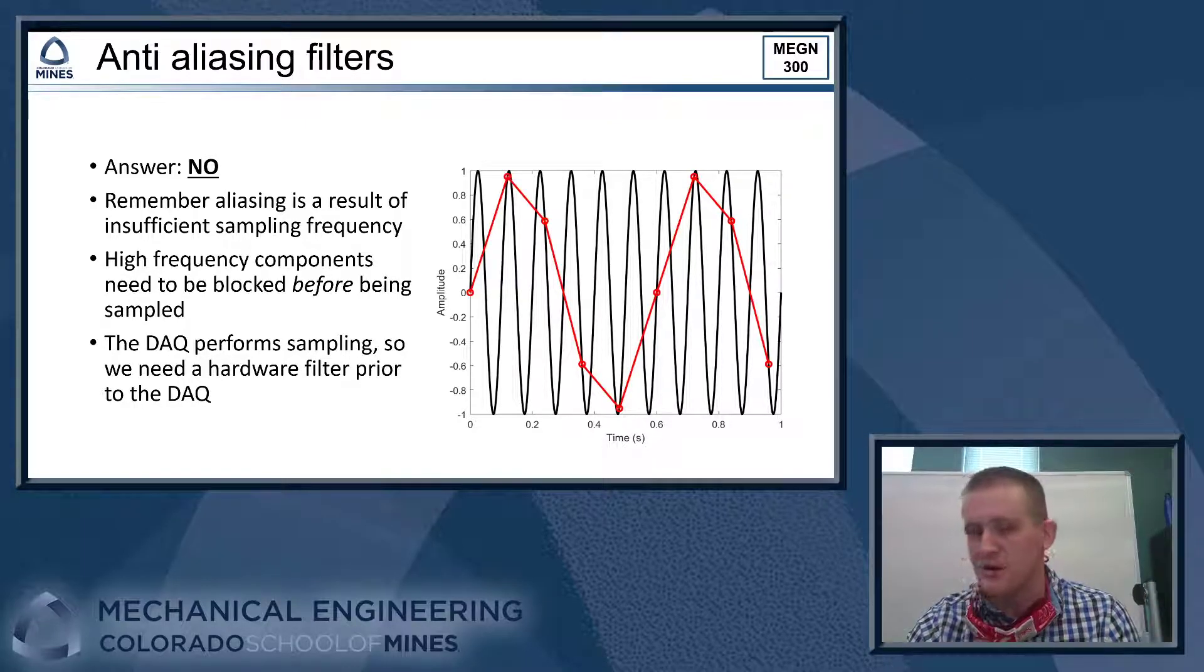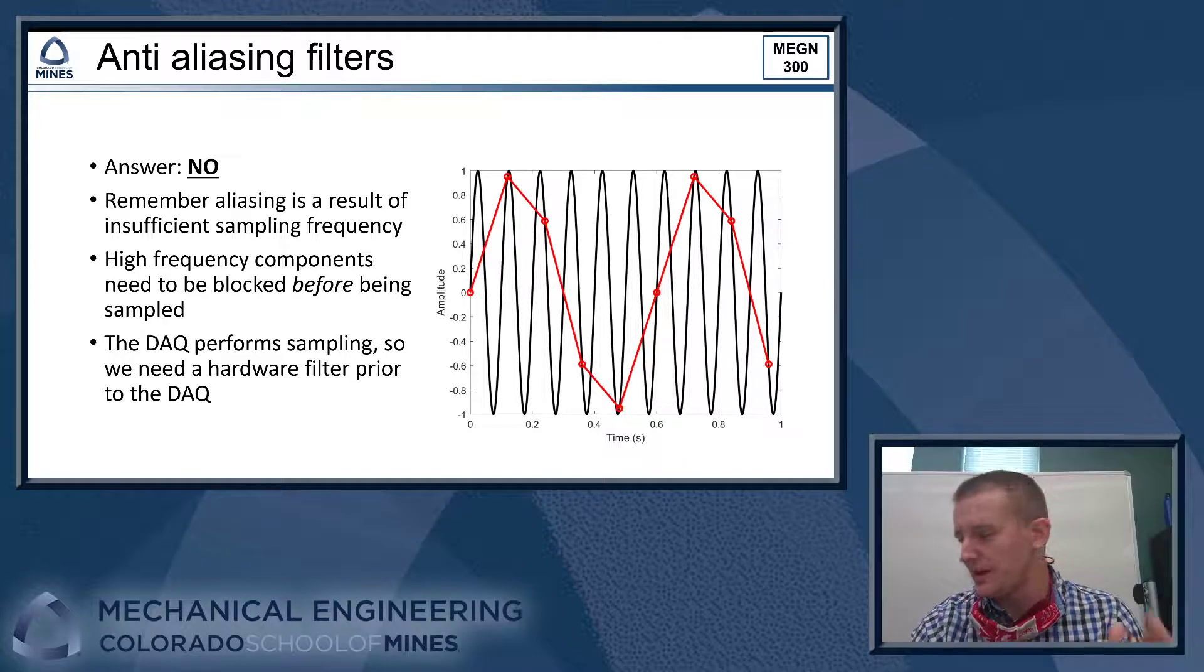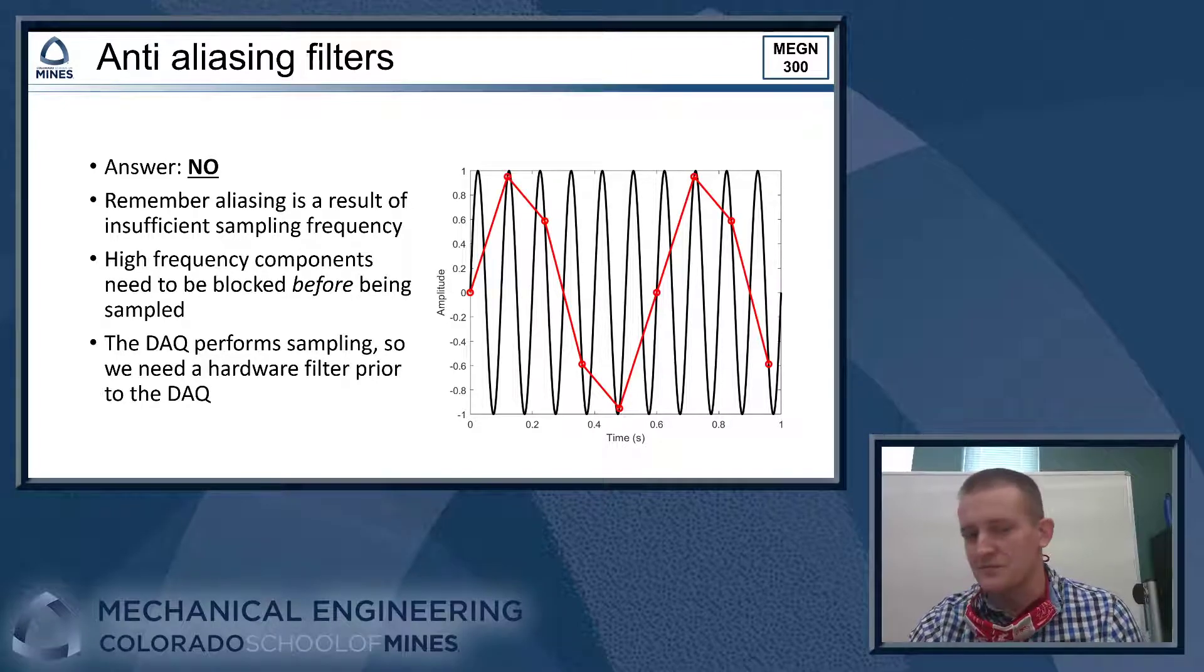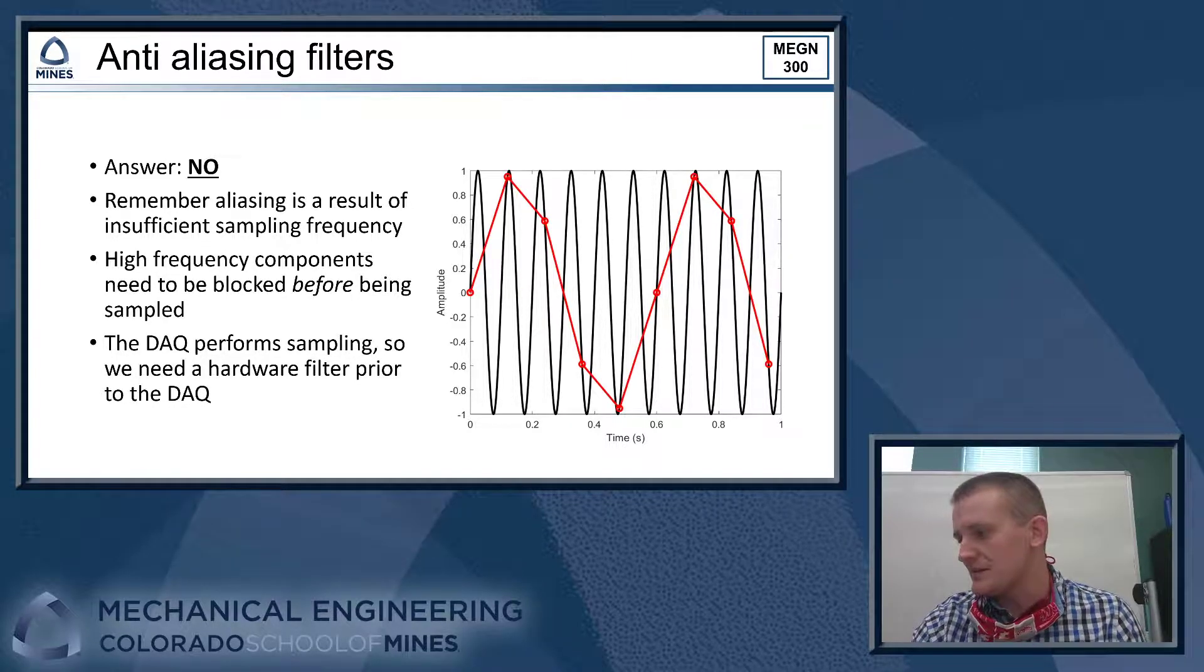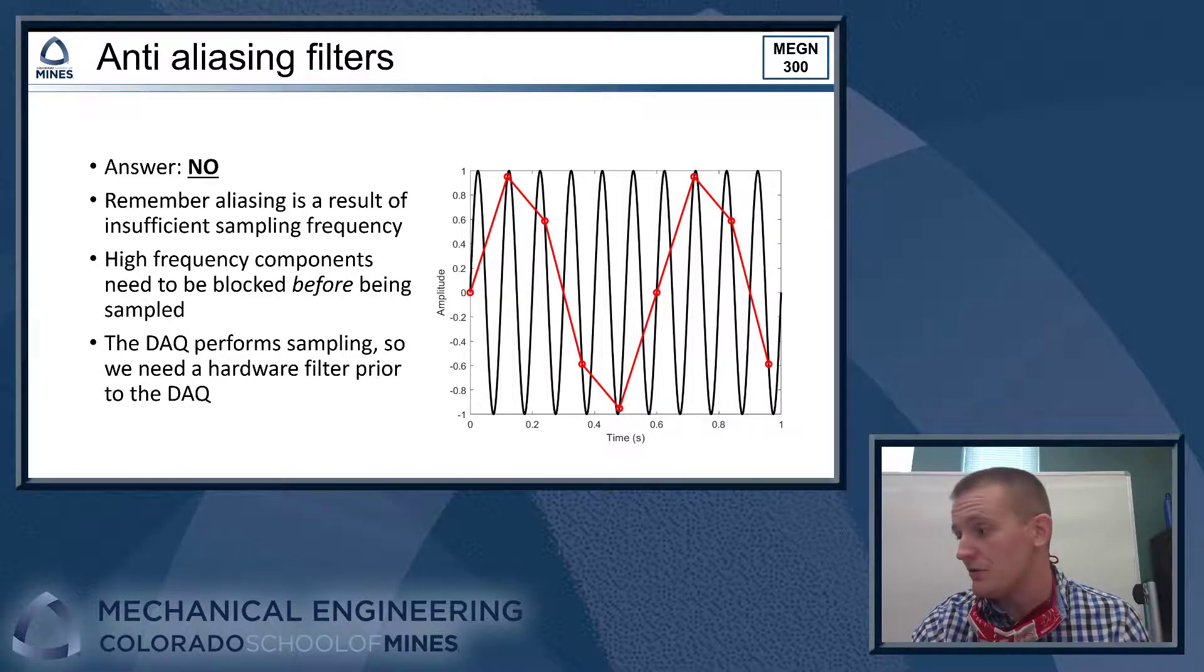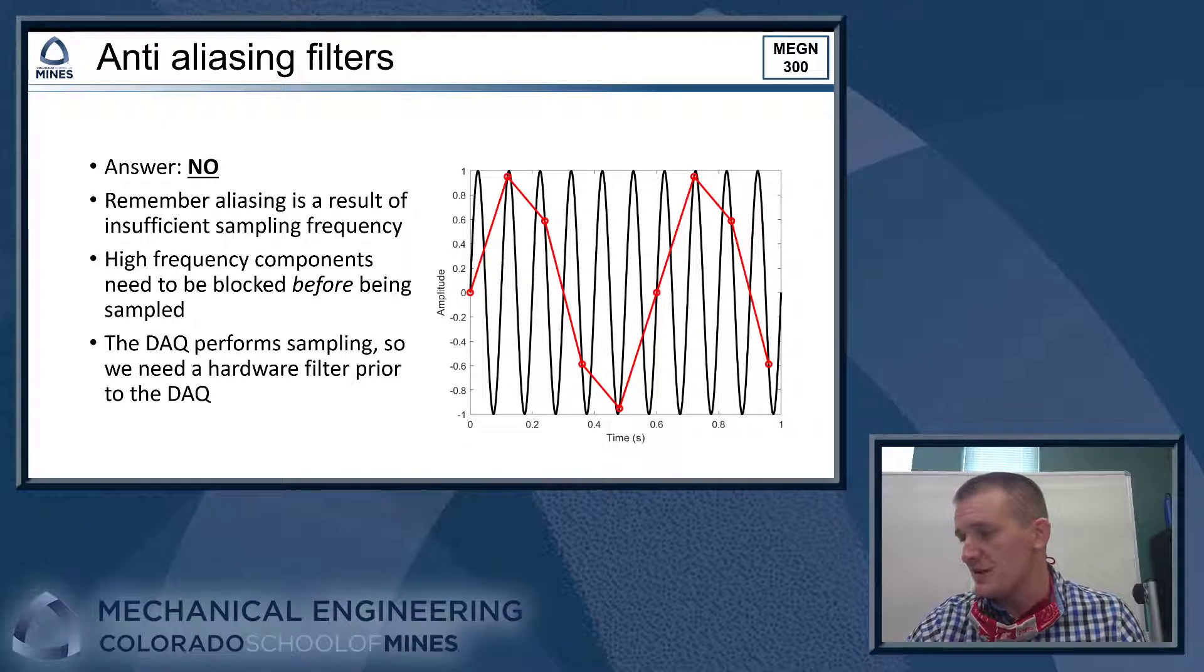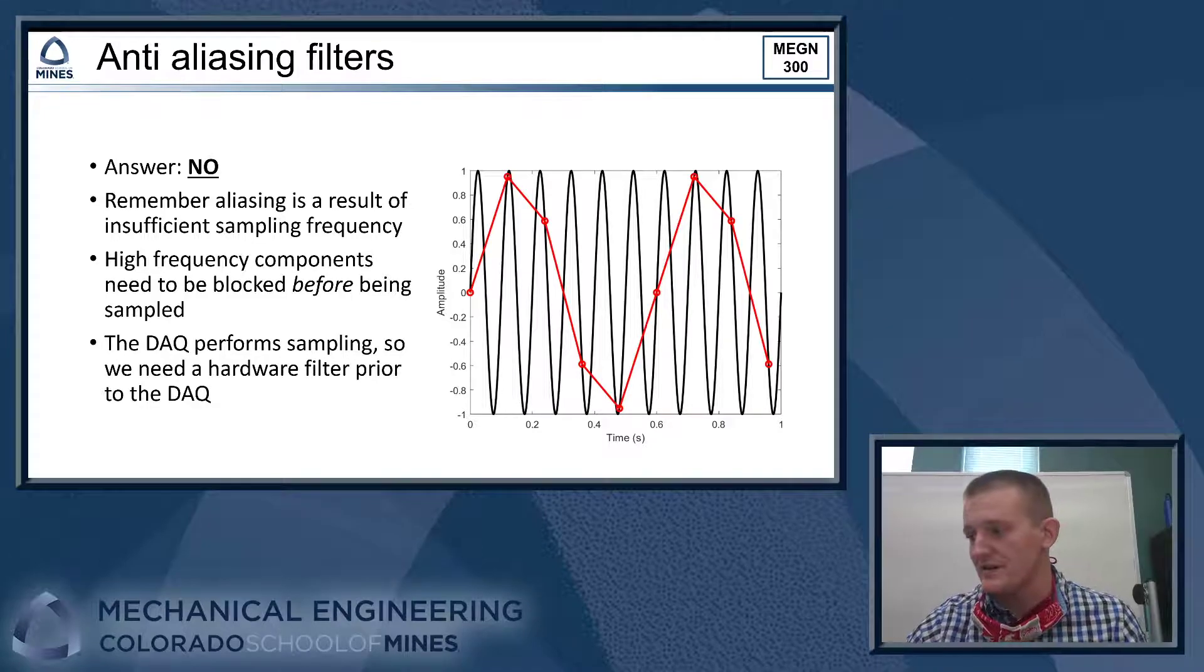So that's where your aliases get formed is when the DAC actually does that sampling. All the data that gets into LabVIEW has already been sampled. So all the high frequency components that you would have in your data have already been aliased and already appear to be lower frequencies than they actually are. So to get rid of aliases and be confident we don't have them in our data, we need to filter those out before the DAC samples them, which means we need to do that in analog hardware.